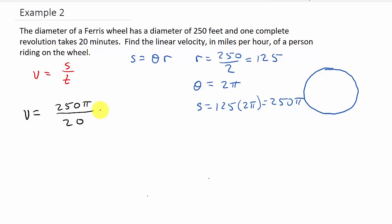And so now we get, let's see, I'm going to do 250 divided by 20, and that gives me 12.5, 12.5 pi, okay. And that is feet per minute, okay.